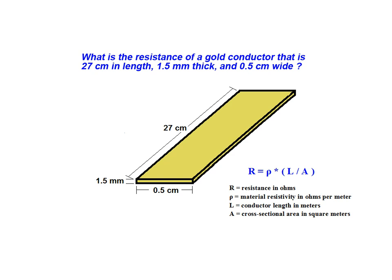Converting our dimensions, we arrive at a length of 0.27 meters, a width of 0.005 meters, and a thickness of 0.0015 meters. Once the dimensions have been expressed in meters, we calculate the cross-sectional area in meters squared.